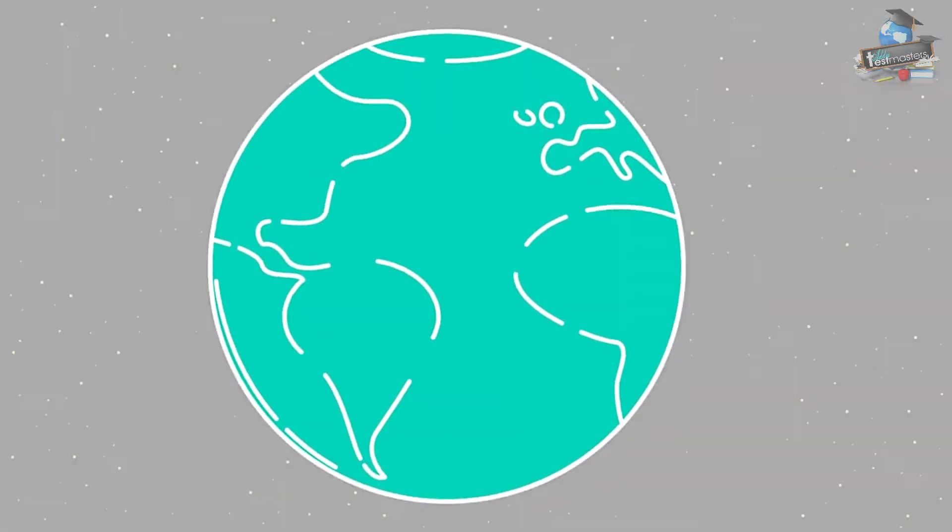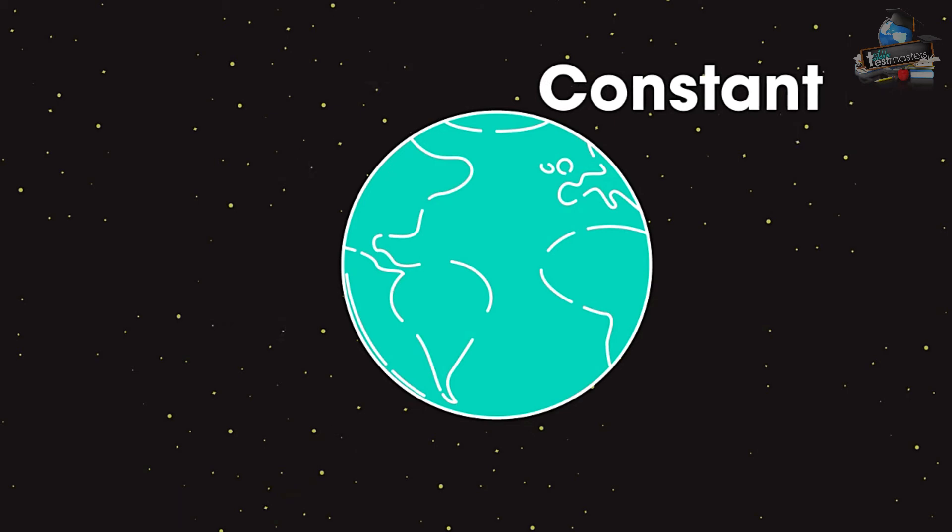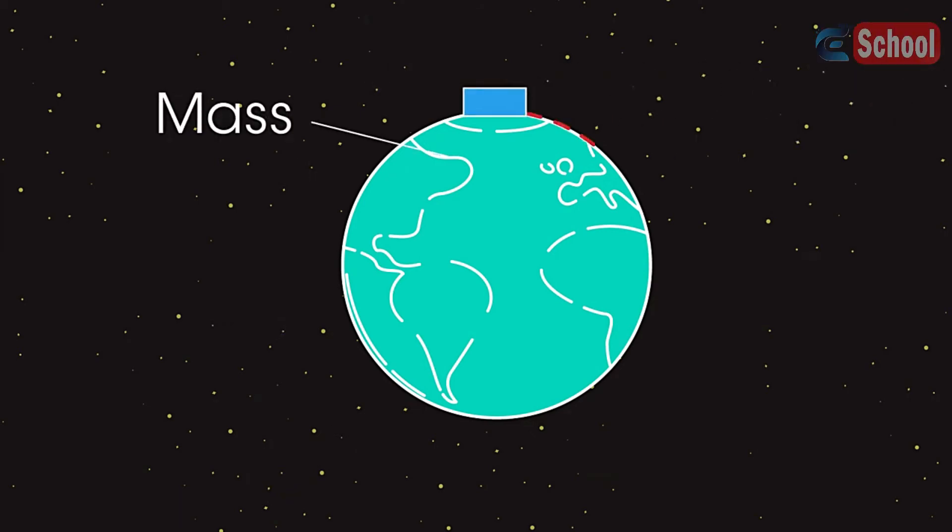On Earth we think of gravity as being a constant. This is because the mass of an object and that of the planet beneath us is constant, and any change in distance between an object and the center of the Earth is negligible.